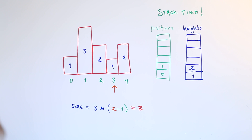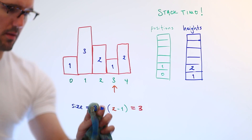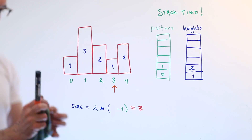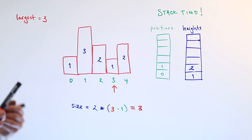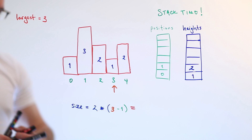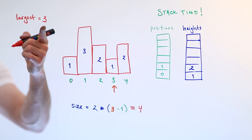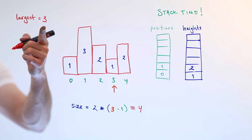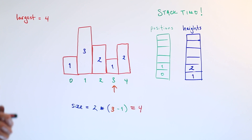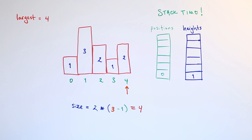The very next thing we hit is height one at position three. We take everything off the stack that's taller than height one and figure out what size rectangle those taller heights were composing. We take the two, which started at position one, and we're now at position three: two times (three minus one) equals four. We choose the maximum between what we've seen before and what we have now. So we replace our previous best: we now have a two-by-two with area four, which is bigger than the height-three-by-one rectangle.